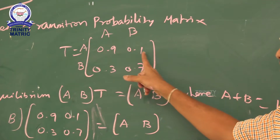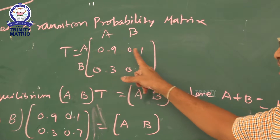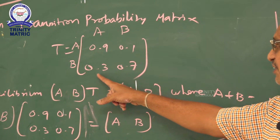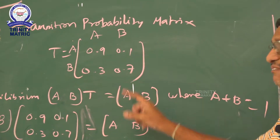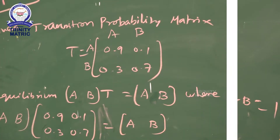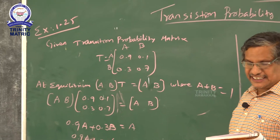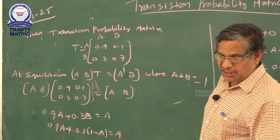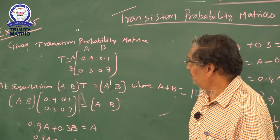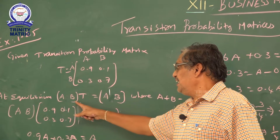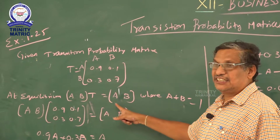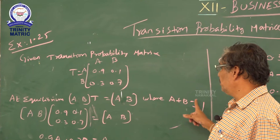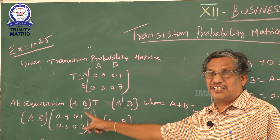Have you observed here? When we add 0.9 plus 0.1, we get 1. Similarly, second row: 0.3 plus 0.7 equals 1. The question asks: determine the market share of each brand at equilibrium position. At equilibrium, [A B] × transition probability matrix = [A B], where A plus B equals 1.